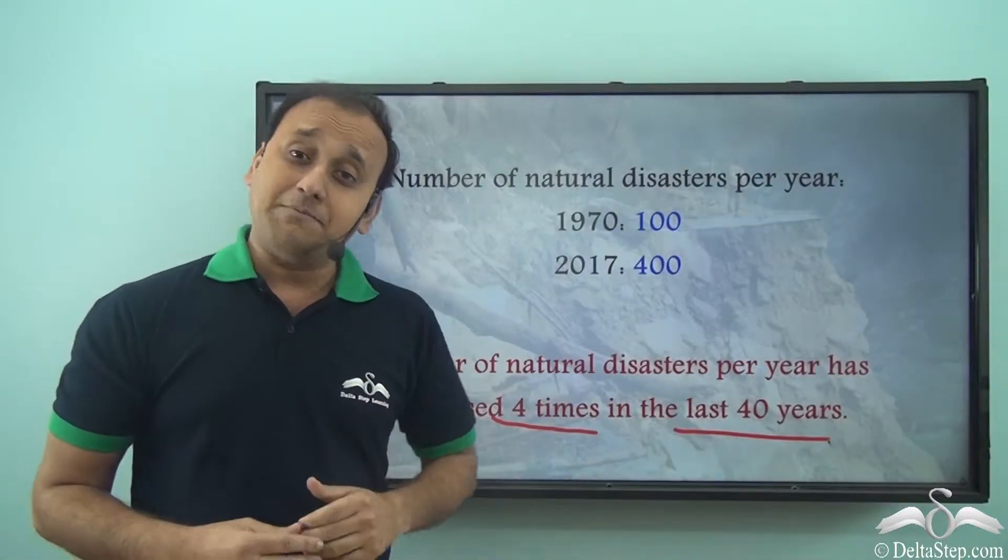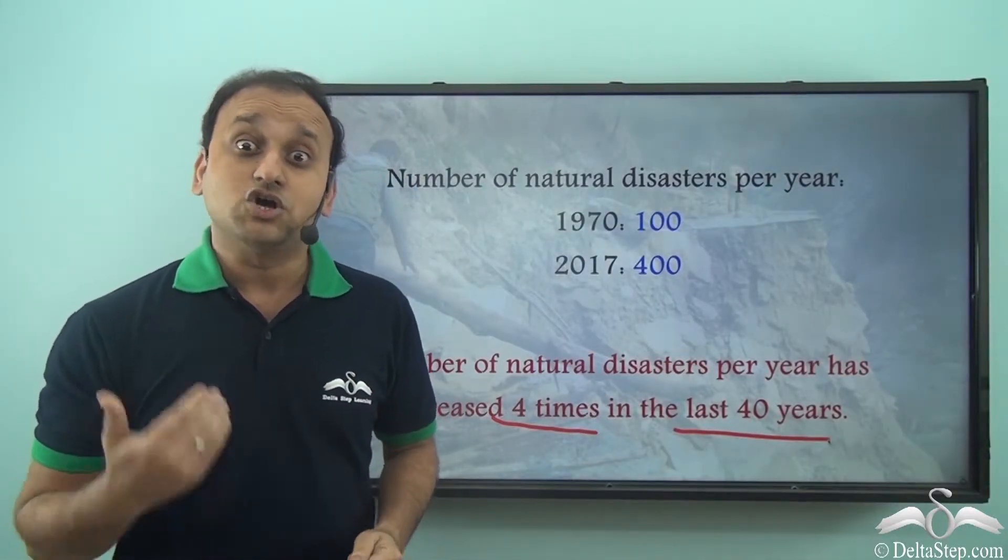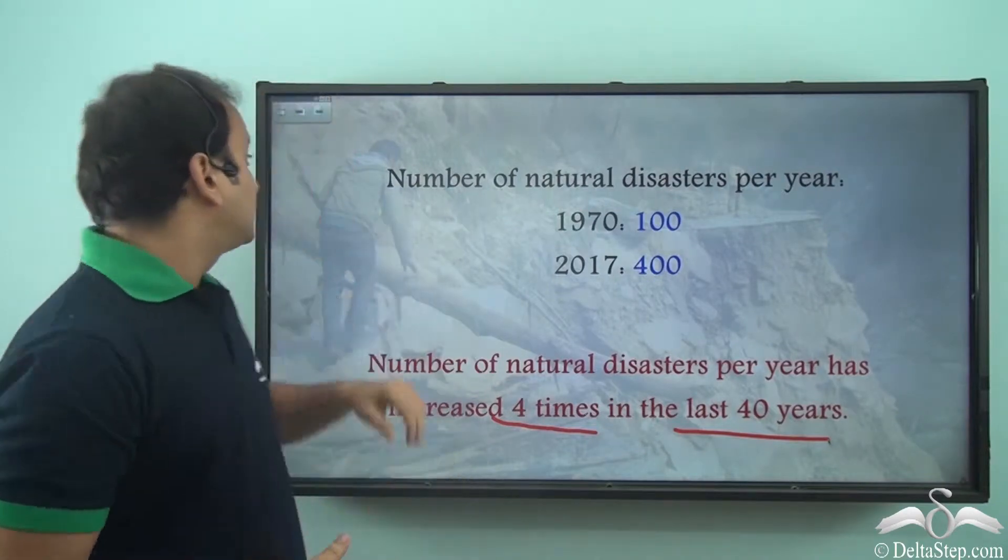So why is it happening? Why is Mother Earth so angry with her own children — the same children for whom she provides all the necessary elements of survival? Well, we humans, children of Mother Earth, are mainly responsible for so much increase in natural disasters.